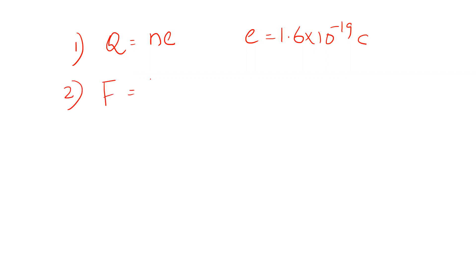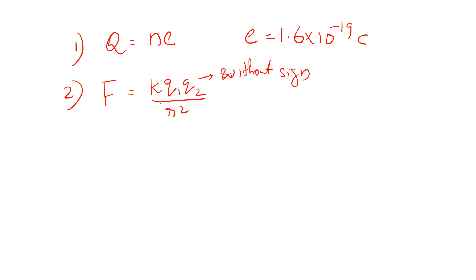The electrostatic force formula is F = K Q1 Q2 divided by R². In this formula, the charges are used without sign — not positive or negative. We use the sign to determine the nature of the force, that is, the direction of the force. We use the magnitude with unsigned charge values.